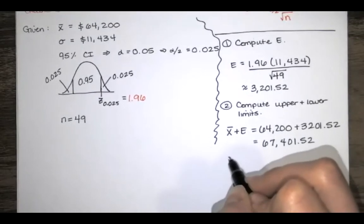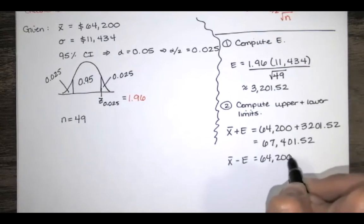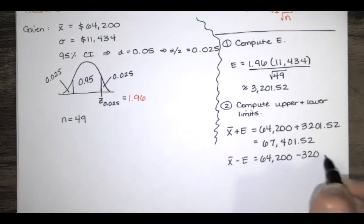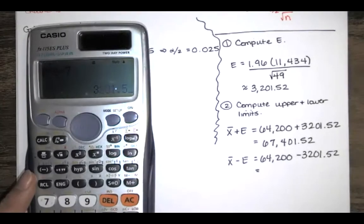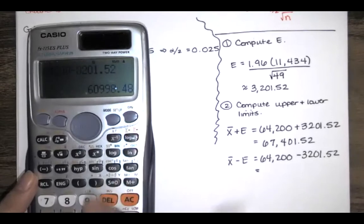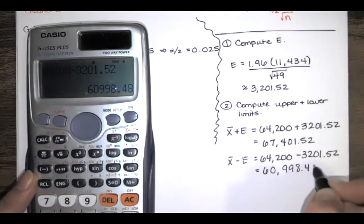And then for our lower limit, we're going to take that 64,200 and subtract that $3,201 and 52 cents. And I'll use a calculator for that one. So that gives me a lower limit of $60,998 and 48 cents.